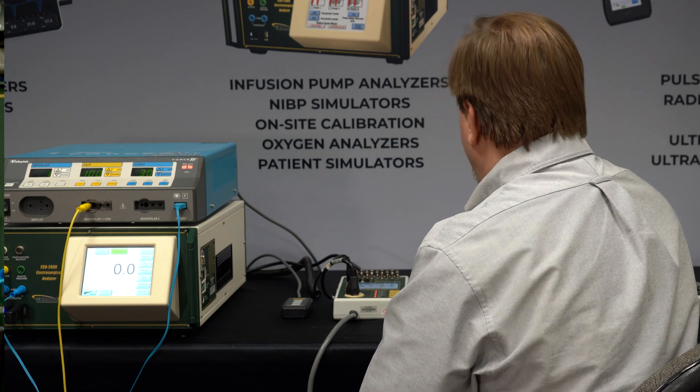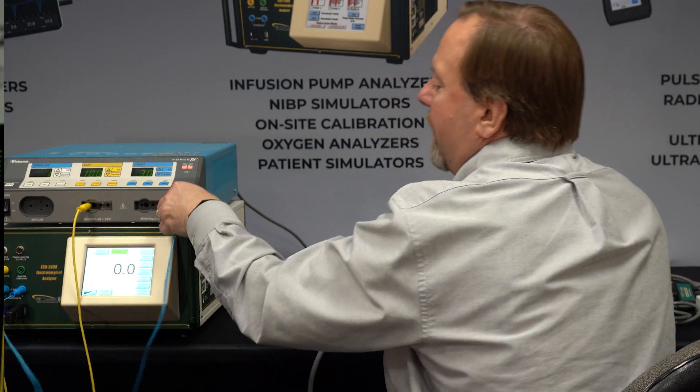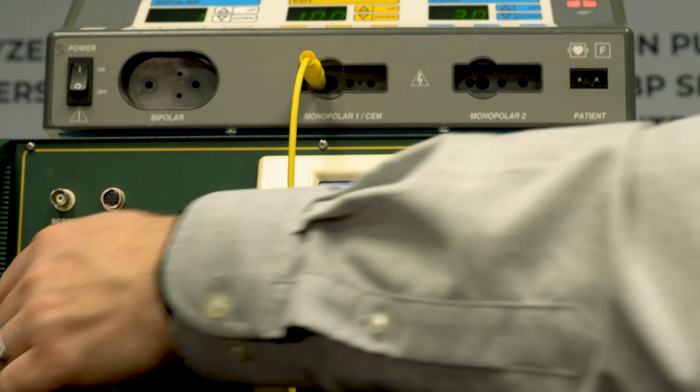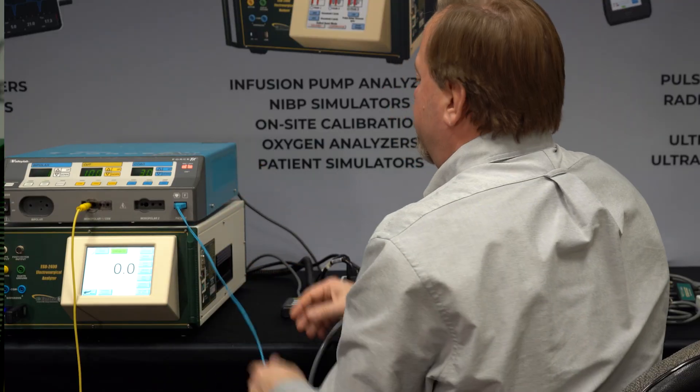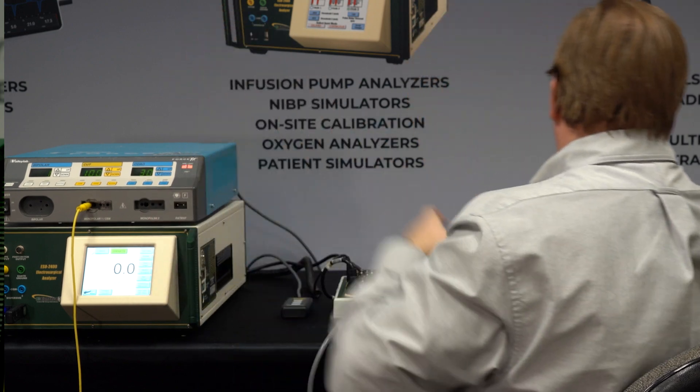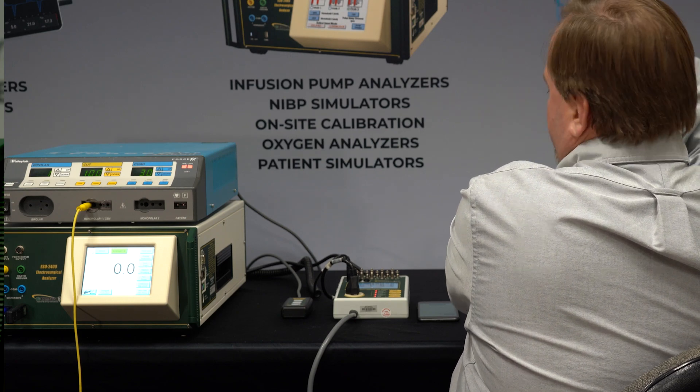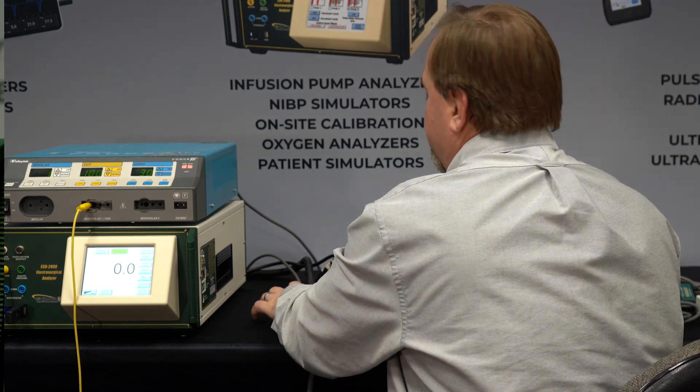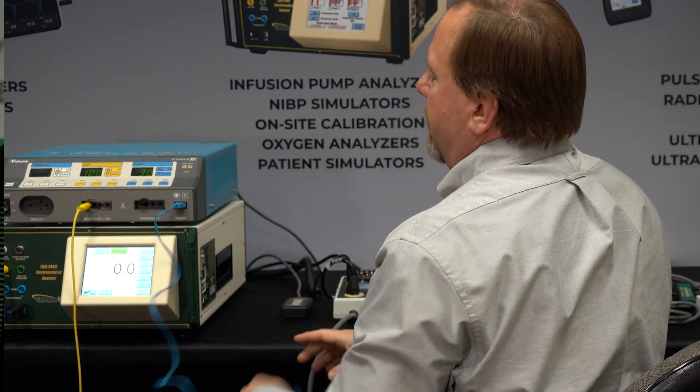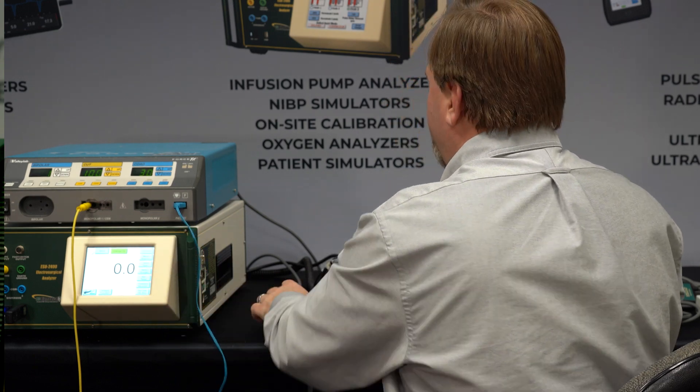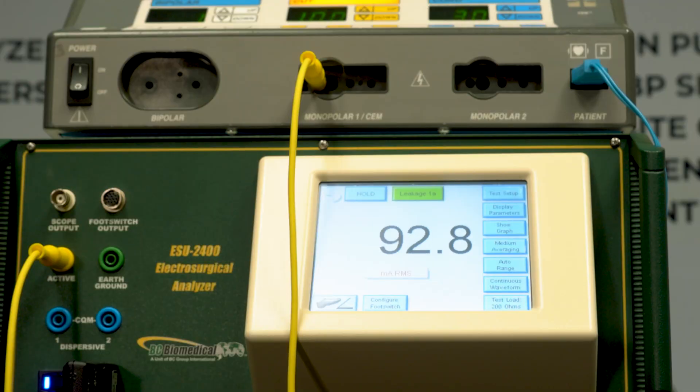We're going to do leakage mode 1A, which is from the active. We're going to measure from the active port to ground. So I don't need to connect the CQM load. I'm just going to plug that in. Actually, I need to change cables to one that's shorted together so that I can trigger the generator, because it won't allow me to trigger the generator without anything plugged into the REM port. So I plug into the REM port. Now we can trigger the generator.